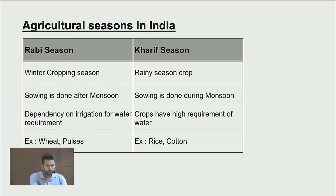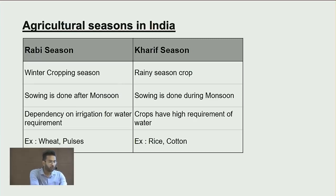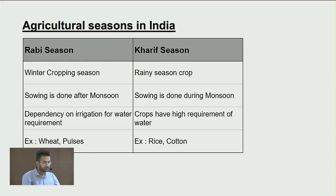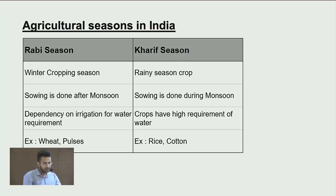There are two major agricultural seasons in India. The first is the Kharif season, also known as the rainy season, where crops are sown from April to September. Paddy and cotton are the main Kharif crops requiring high water. The second is the Rabi season, a winter crop season where sowing is done from October to April, with wheat and pulses as main crops.